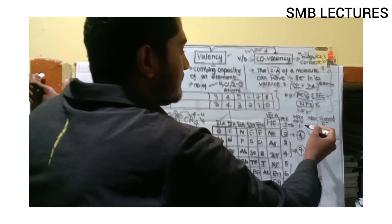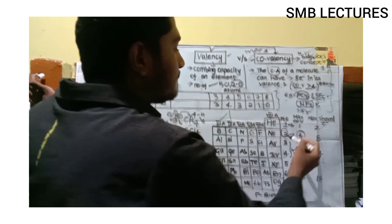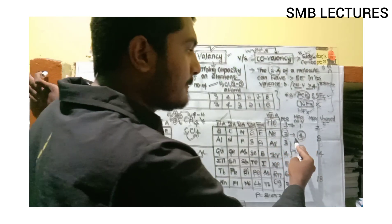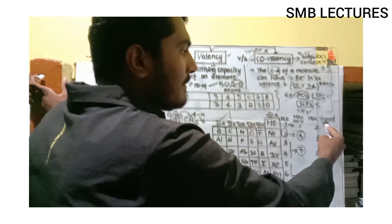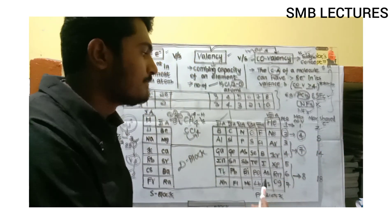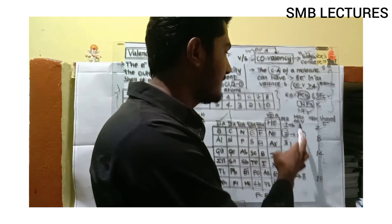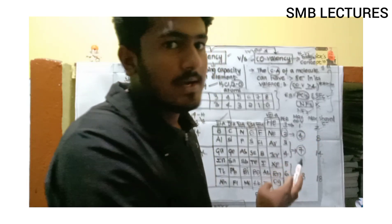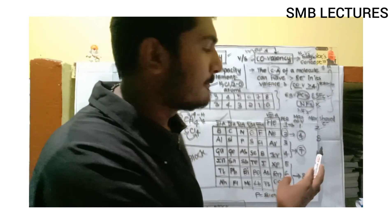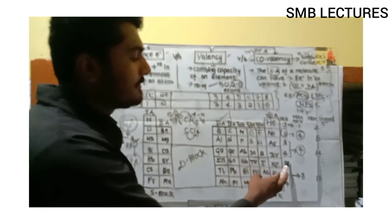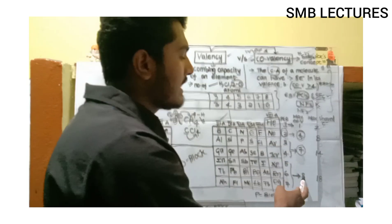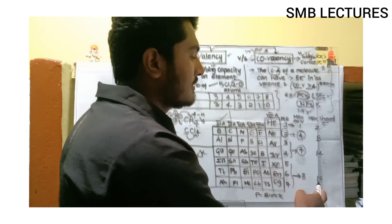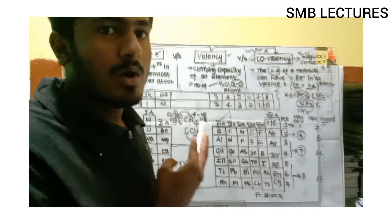In the second period, the maximum covalency is four and the number of shared electrons is eight. In the third and fourth periods, the maximum covalency is seven and the maximum shared electrons is 14. From the fifth period onwards, the maximum covalency is eight and the maximum number of shared electrons is 18.